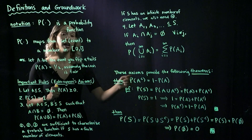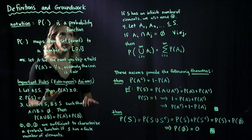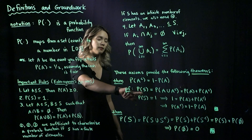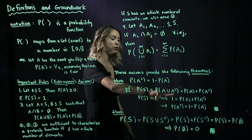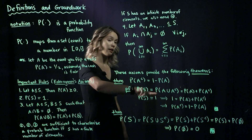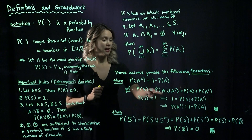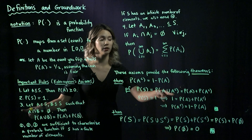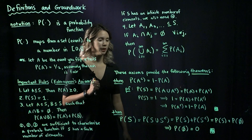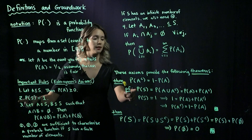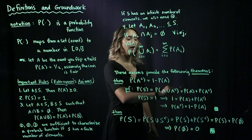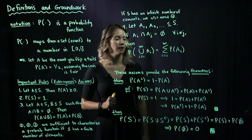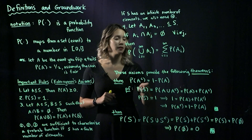The probability of something not happening equals one minus the probability of that thing happening. This is pretty intuitive, but now we can actually mathematically prove it. We start with the probability of our entire sample space, and we know we can partition this into A union A complement. So P(S) = P(A ∪ A^c). Now using axiom 3, since A and A complement are disjoint, this becomes P(A) + P(A^c). By axiom 2, P(S) = 1, so we have 1 = P(A) + P(A^c). Rearranging, P(A^c) = 1 − P(A). Theorem proved.